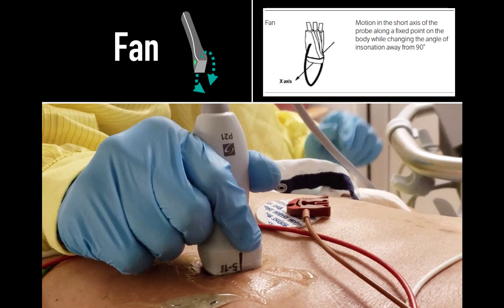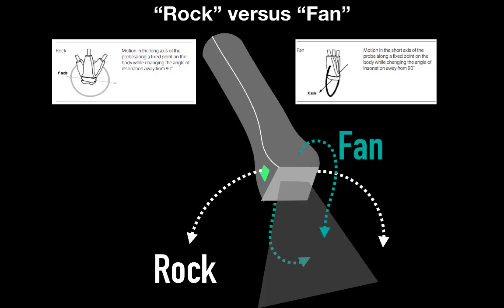This illustration shows the difference between rocking and fanning and how this beam moves. But the key thing to remember is both rocking and fanning involve the probe remaining in the same point in the patient's body, but with different movements of the long axis of the image.